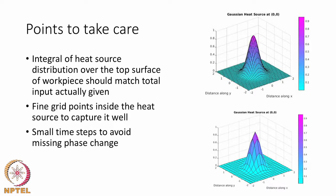The number of grid points where we estimate the heat source distribution in a model must also be high enough so we can capture the entire variation. If the number of grid points is very small, the variation is not captured completely. You can see that the plot above has many grid points capturing the smooth Gaussian variation, while the plot below looks quite faceted because the number of grid points is very small. This information must be kept in mind because erroneous results will follow when the number of grid points within the weld zone is inadequate.